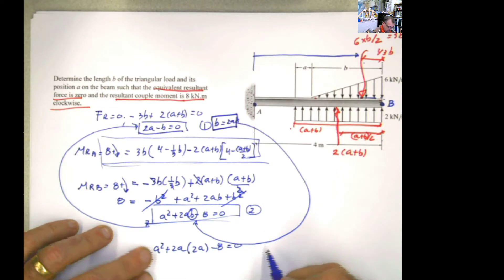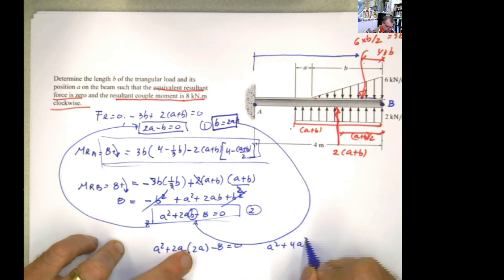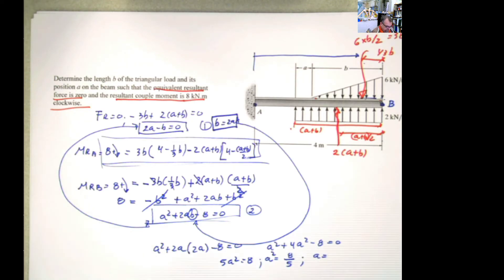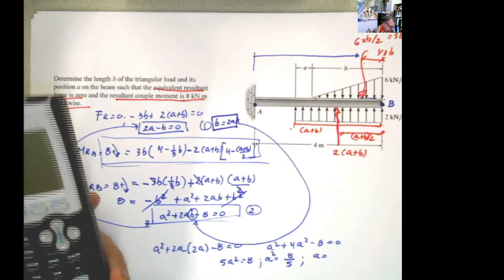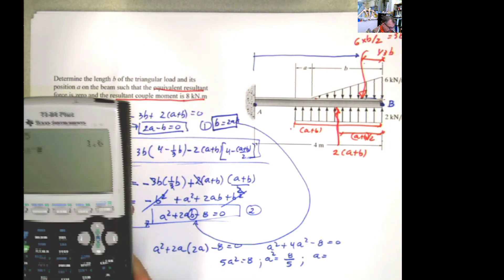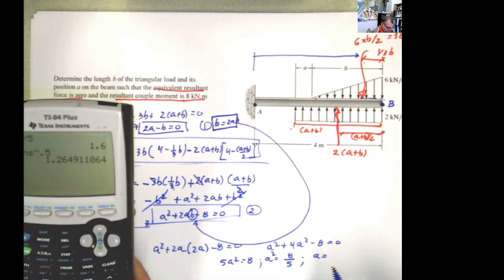You get a squared plus 4a squared minus 8 equals 0. And then 5a squared equals 8. a squared equals 8 over 5. And then you can calculate a. And a will be divided by 5, 1.6 square root, 1.26.